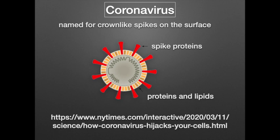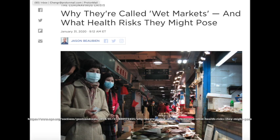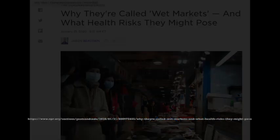Coronavirus 2019 is the disease caused by SARS-CoV-2. SARS-CoV-2 is a zoonotic virus. Zoonoses are infectious diseases caused by bacteria, viruses, or parasites that spread from non-human animals to humans. SARS-CoV-2 spreads easily and has a high morbidity and mortality. Authorities think it originated from the seafood market in Wuhan province, China. The market is a wet market or wildlife market where live and dead animals are sold for human consumption.